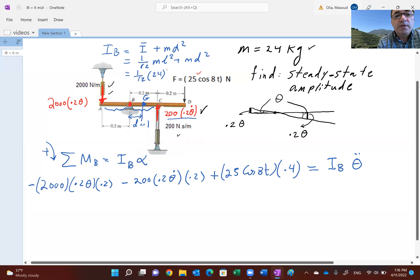If you do the calculation here, remember the mass is 24, the length of the bar is 0.6, and D is 0.1. This happens to be 0.96, the unit of kilogram meter squared.